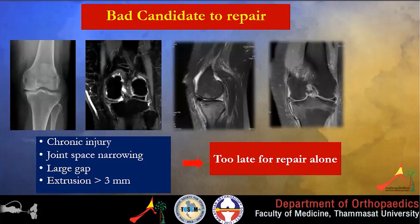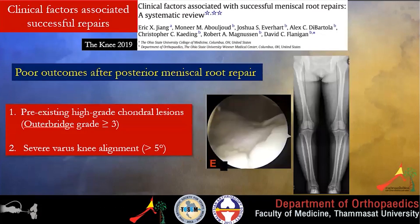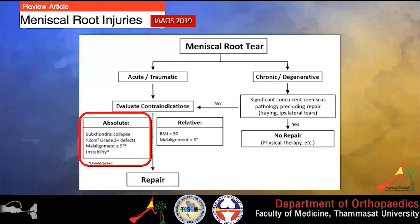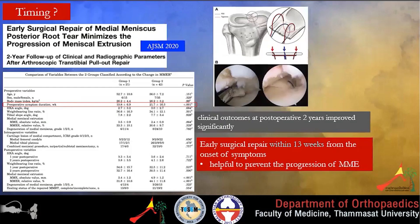A systematic review showed poor outcomes of meniscus root repair in patients with pre-existing high-grade cartilage loss, meniscus extrusion greater than 3 mm, and severe varus knee alignment of more than 5 degrees. A summary from a JAAOS 2019 review article states that in acute and traumatic tears you should repair if there are no absolute contraindications such as subchondral collapse more than 2 cm², malalignment greater than 5 degrees, or unaddressed instability. This paper also suggests that early surgical repair of medial meniscus root within 13 days after injury can prevent progression of medial meniscus extrusion.